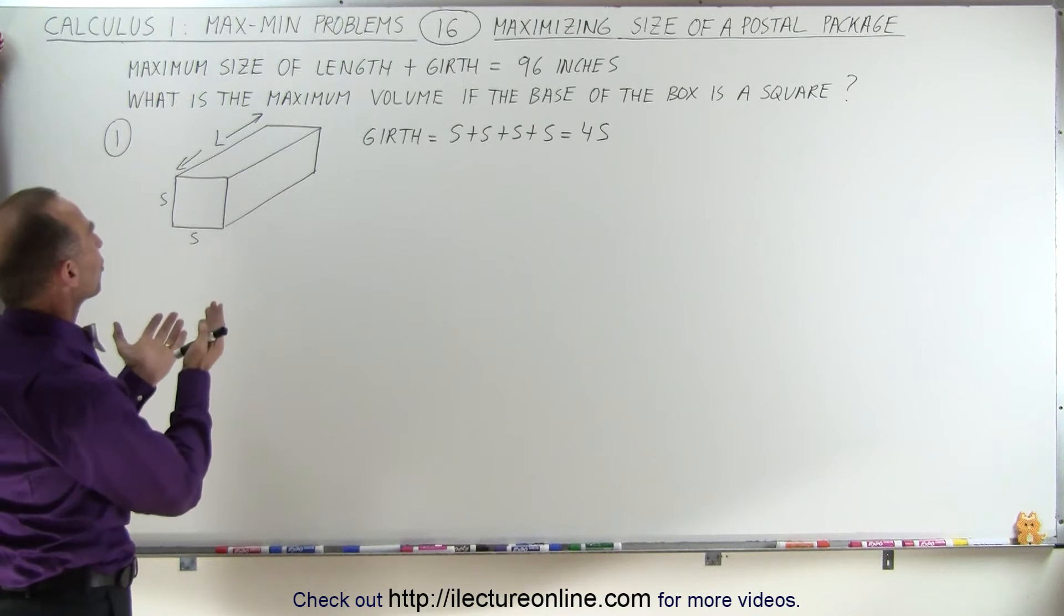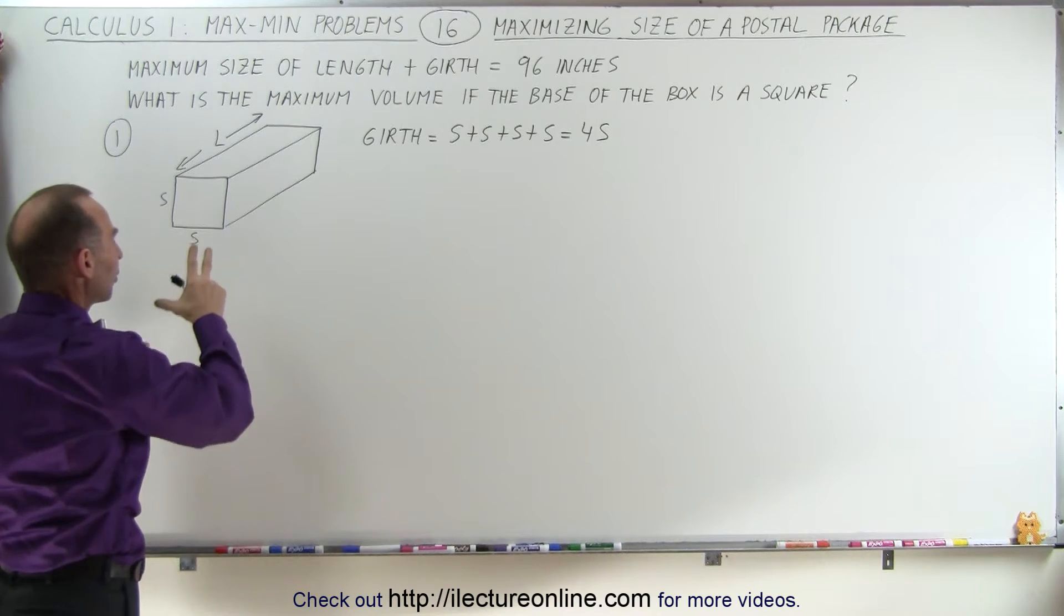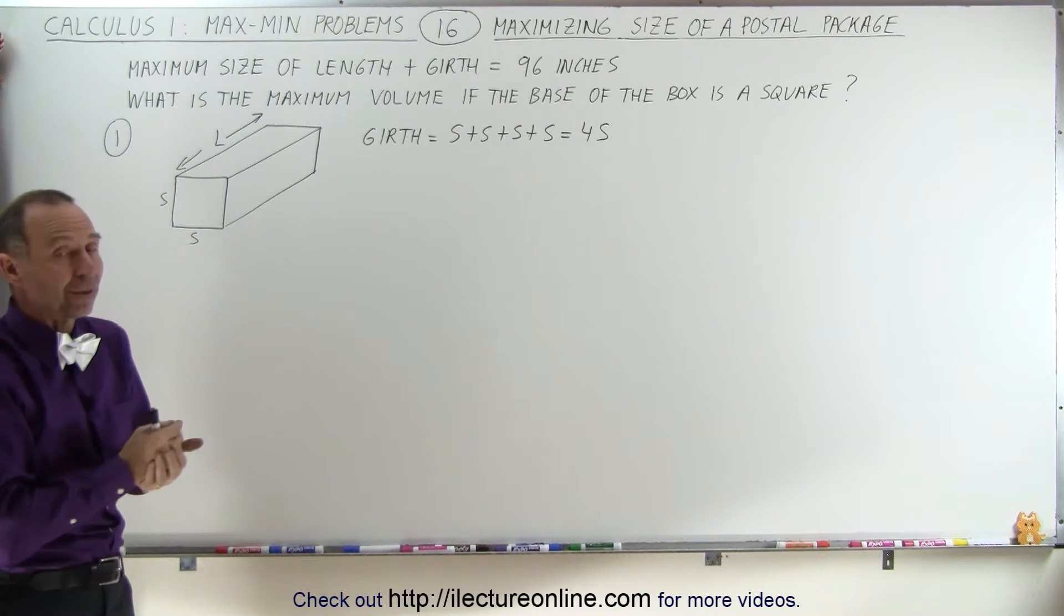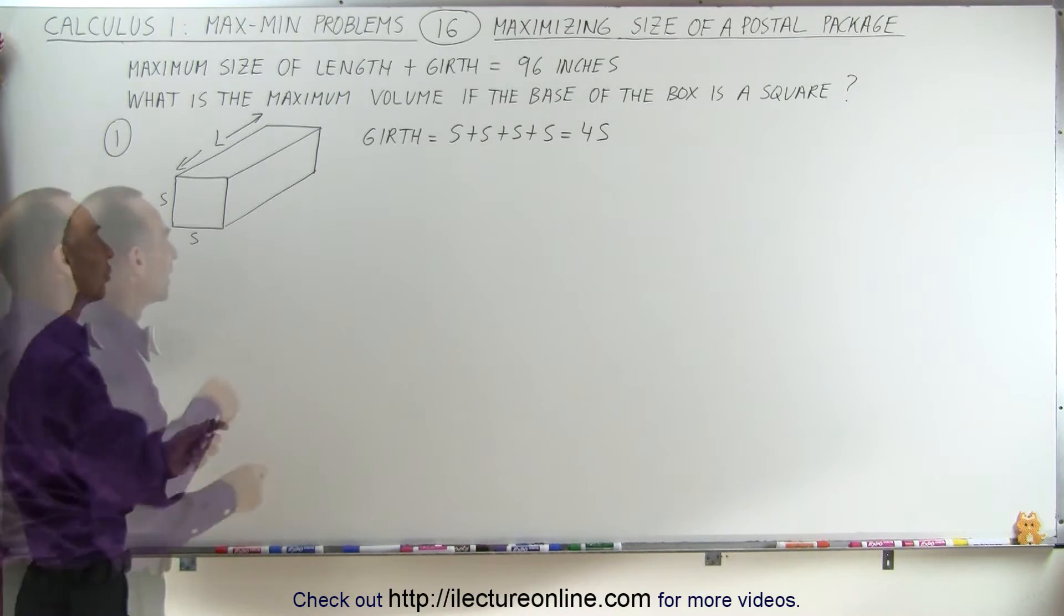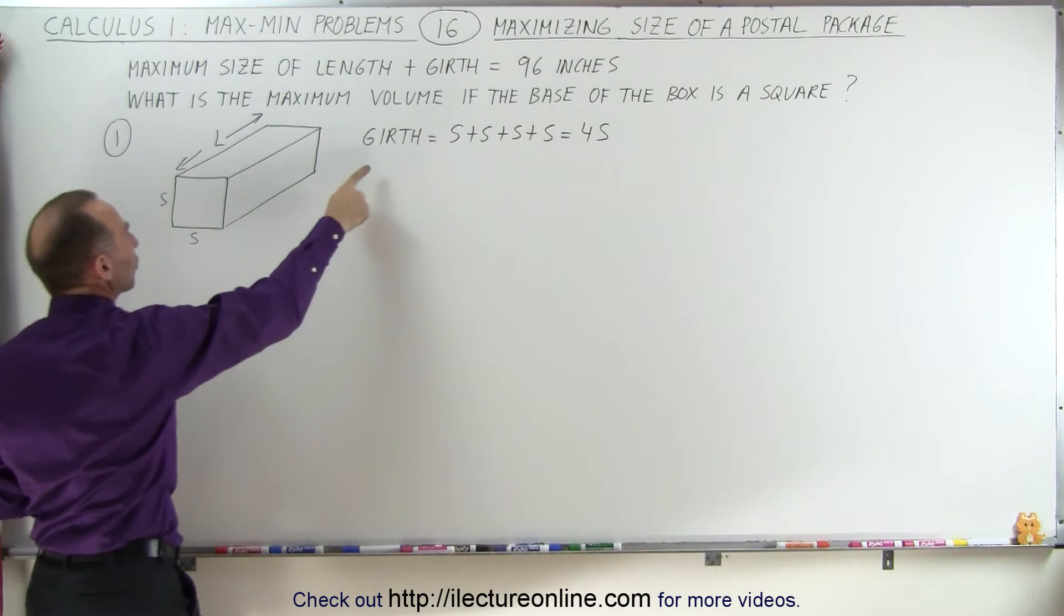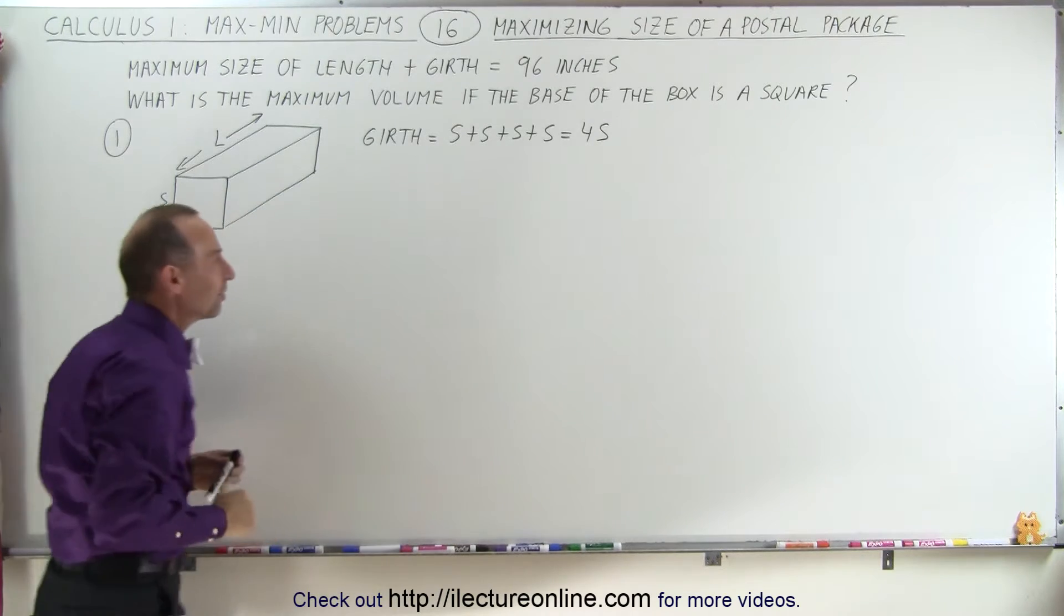The way that's measured is the total sum of the length of the package plus the girth cannot exceed a certain number of inches. Let's say that maximum is 96 inches. The girth is the circumference of the base, which is square. That means the girth is s+s+s+s, or 4s.